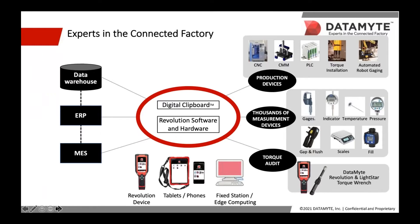This slide shows the interconnectivity we build between systems and machines. We connect the entire factory with workers at all levels to empower them. In the center, we have two flagship solutions: Digital Clipboard and the Revolution software and hardware. As you can see, these solutions integrate with shop floor systems, machines, metrology devices, and many other plant-level tools and solutions, including those for torque audit.